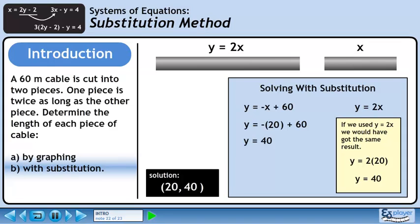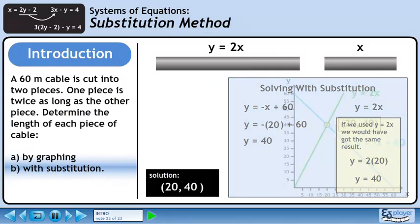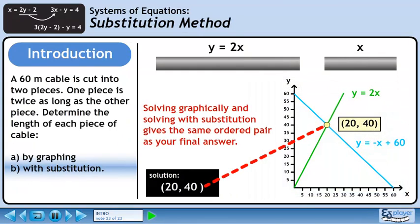If we used Y equals 2X instead, we would have got the same result. Solving graphically and solving with substitution will always give you the same ordered pair as your final answer.